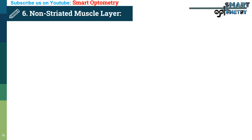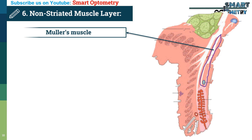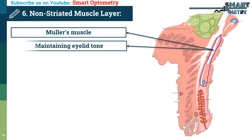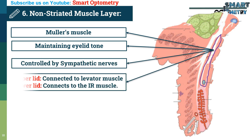Layer 6 – The Non-Striated Muscle Layer. Next, we have Müller's muscle, a layer of non-striated muscle fibers. It plays a role in maintaining eyelid tone and is controlled by sympathetic nerves. In the upper lid, it's connected to the levator muscle, and in the lower lid, it connects to the inferior rectus muscle.